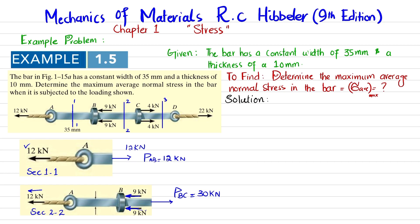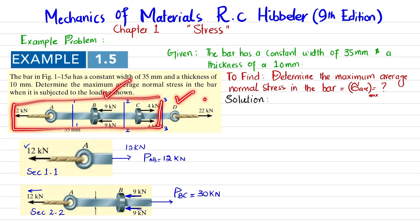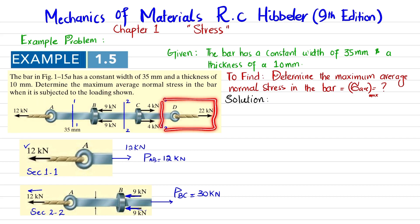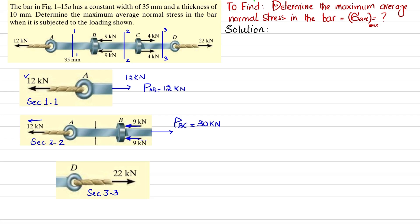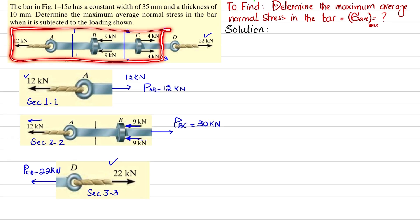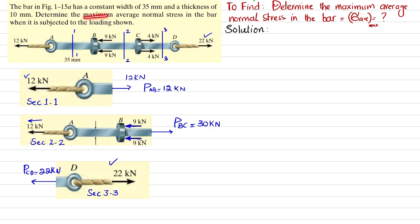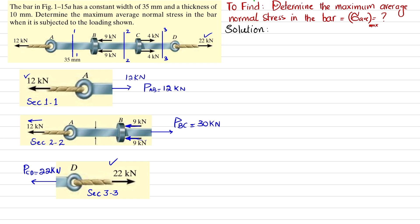The third cut is at section 3-3. We draw the free body diagram for this portion. A 22 kilonewton load is acting toward the right-hand side, so P_CD equals 22 kilonewtons. Verifying with the other portion: 12 plus 9 plus 9 is 30 kilonewtons toward the left, and 8 kilonewtons toward the right, giving a net of 22 kilonewtons toward the left. So P_CD equals 22 kilonewtons.